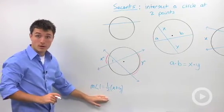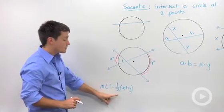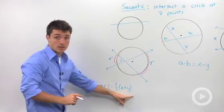So I wrote that down here in our equation. Measure of angle 1 is equal to half the sum of the intercepted arcs.